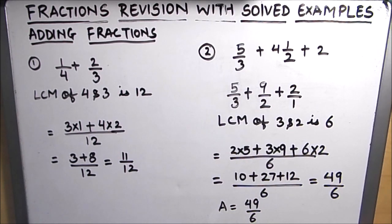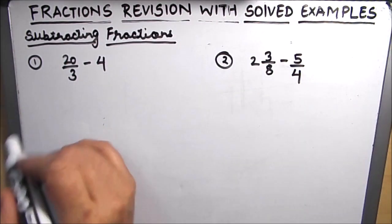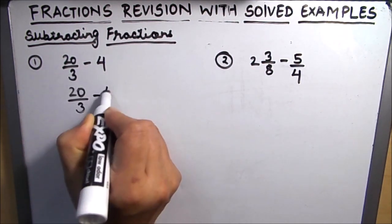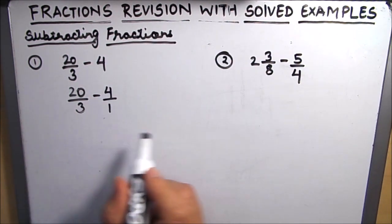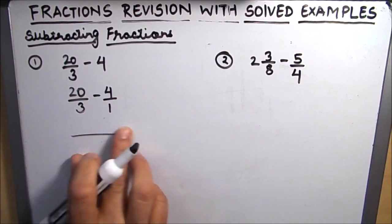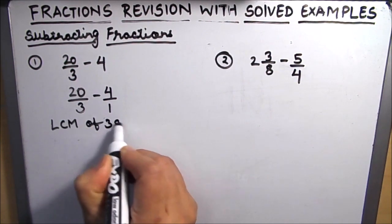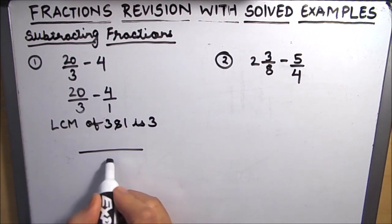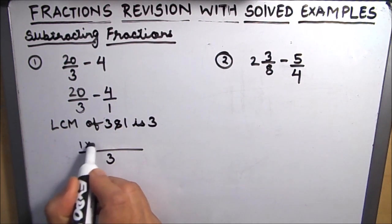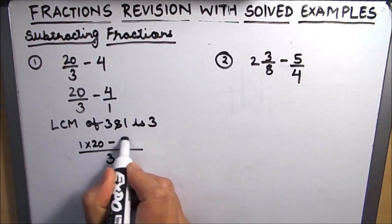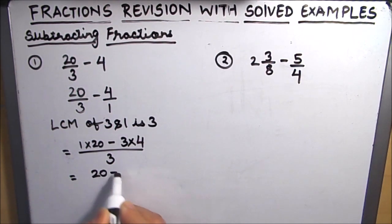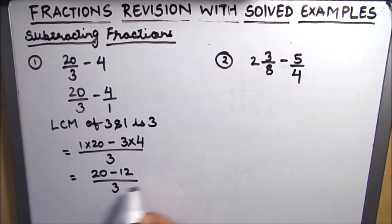Let's move on to subtraction of fractions. We have taken two examples. The first one is 20 over 3 minus 4. This can be written as 20 over 3 minus 4 over 1. We do the same process as addition — we find the LCM of 3 and 1, which is 3. The common denominator is 3. So we compute 1 times 20 minus 3 times 4, giving 20 minus 12 over 3, which equals 8 over 3. This is our final answer.